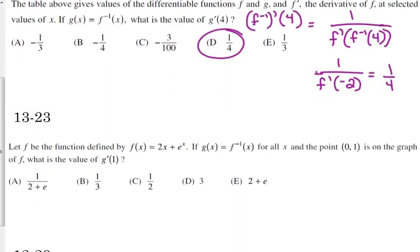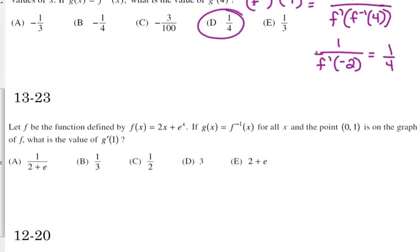In 2013, they didn't give you a table. They gave you a function. 23, that would still be on the calculator inactive portion. So they tell us that g is the derivative of f and f is 2x plus e to the x. The point 0, 1 is on the graph of f. What is the value of g prime? So, g prime of 1. So that's 1 over f prime of f inverse of 1.